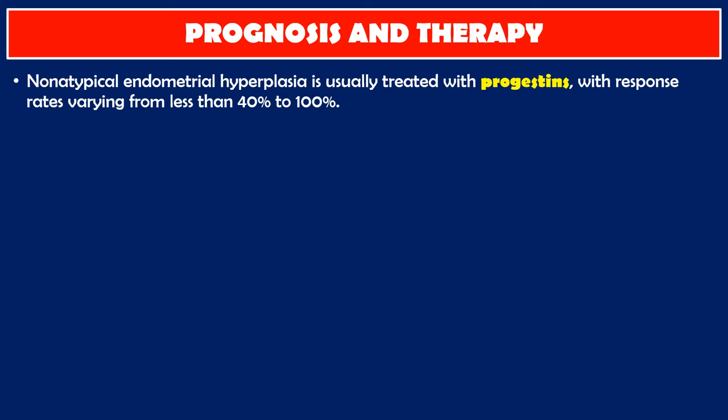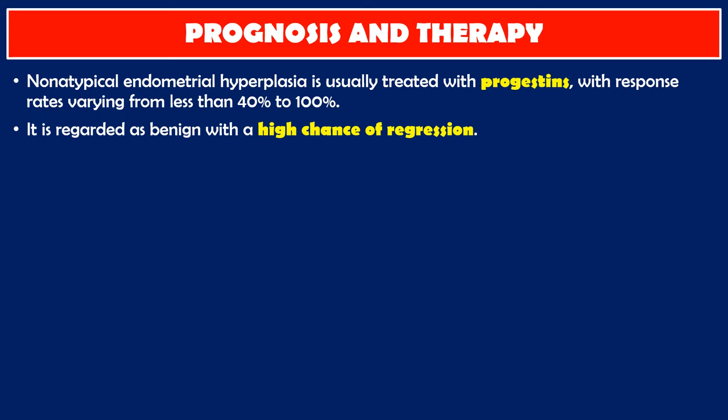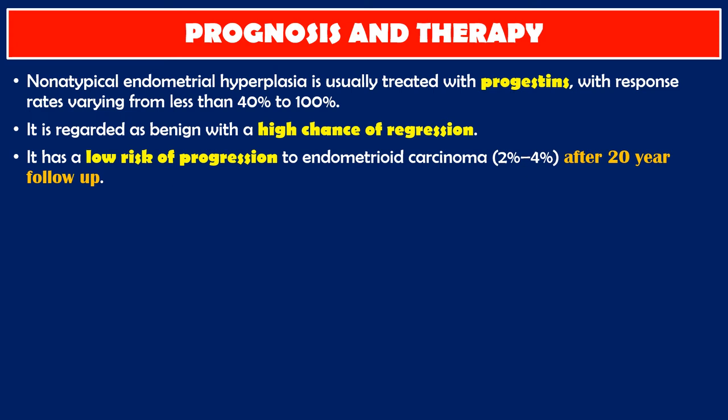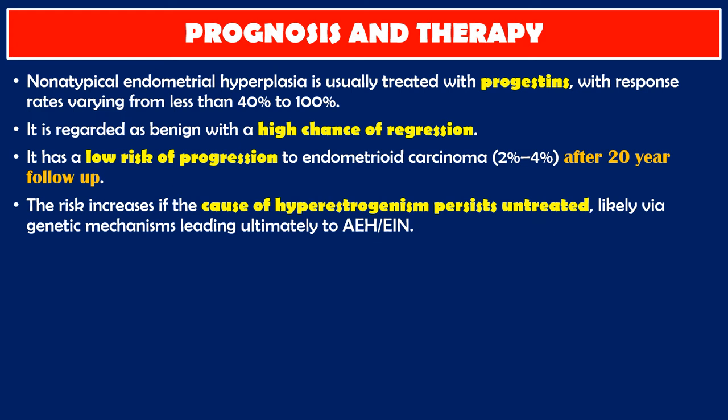Prognosis and therapy — non-atypical endometrial hyperplasia: it is usually treated with progestins, with response rates varying from less than 40% to 100%. It is regarded as benign with a high chance of regression and a low risk of progression to endometrial carcinoma of 2% to 4% after 20-year follow-up. The risk increases if the cause of hyperestrogenism persists untreated, likely via genetic mechanisms leading ultimately to atypical endometrial hyperplasia.